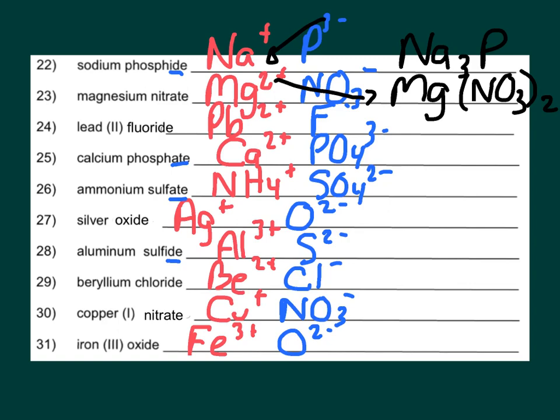Lead two fluoride. The two goes down here, that means that's PbF2. I have one lead, I have two fluoride ions. Calcium phosphate. The two goes down here, the three goes over there. So it should be Ca3(PO4)2. Same exact thing, I need parentheses. Otherwise it would look like I have 42 oxygens.